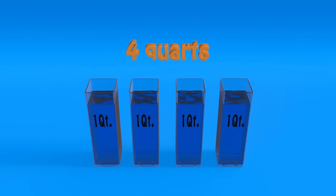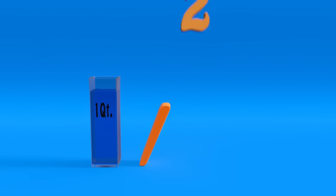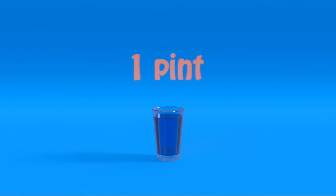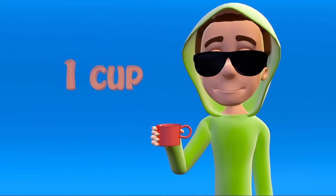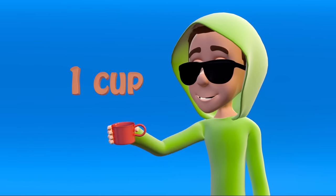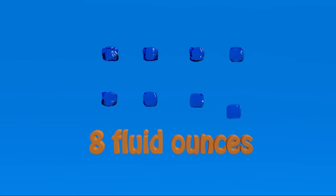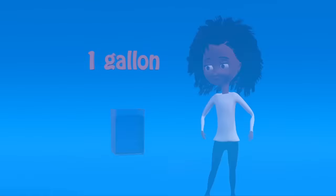One gallon split into fours is four quarts. Take that and divide by two when you got a pint. Split that pint up into halves and make a cup, and that cup will fit eight fluid ounces inside of it.